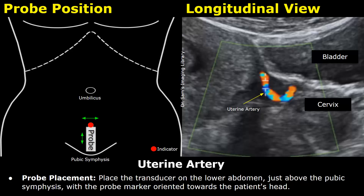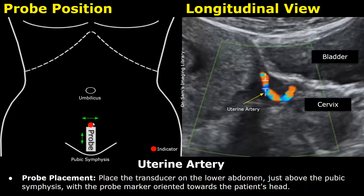This is a transabdominal approach. The transducer is placed on the lower abdomen just above the pubic symphysis, with the probe marker oriented towards the patient's head. This will give a longitudinal view of the uterus.